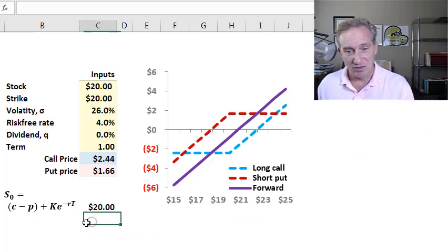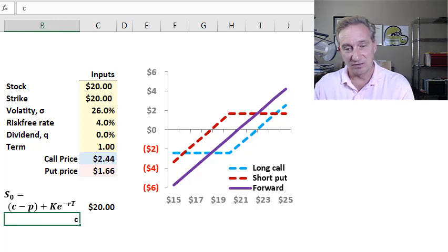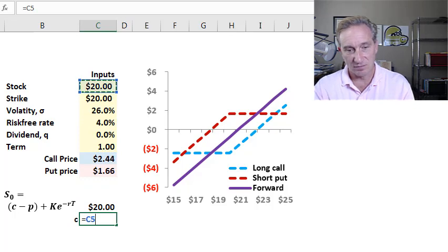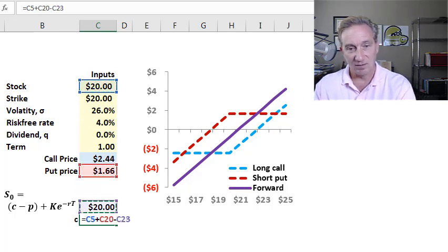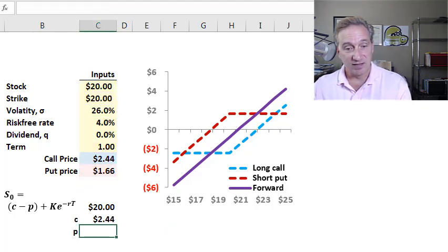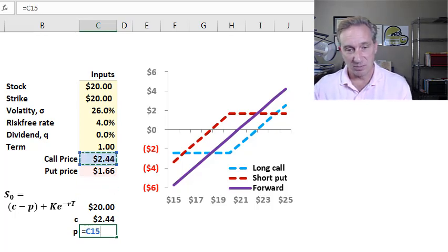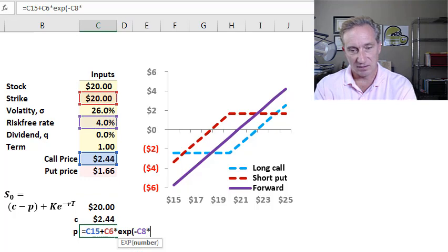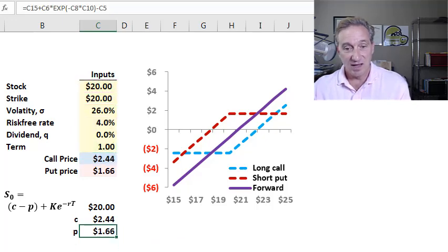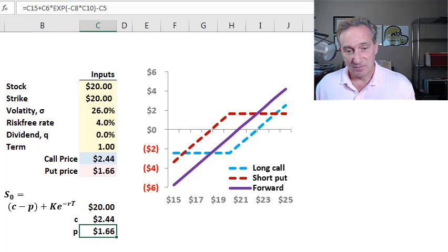In terms of applications, we can rearrange this in any way. If we want to solve for the call, we do need to know the put price. But if we know the put price, then we can take stock price plus the put price, $1.66, and subtract the strike price discounted at the risk free rate, and we get the call price. On the other hand, if we know the call but want to solve for the put, we can take the call price, add the strike price discounted at the risk free rate, and subtract the stock price to solve for the put price.